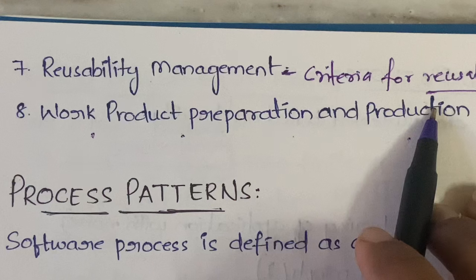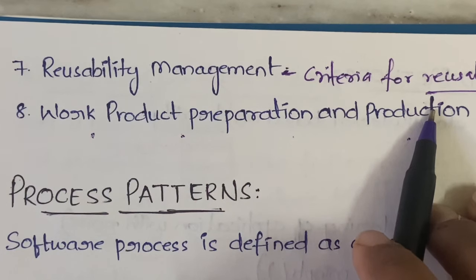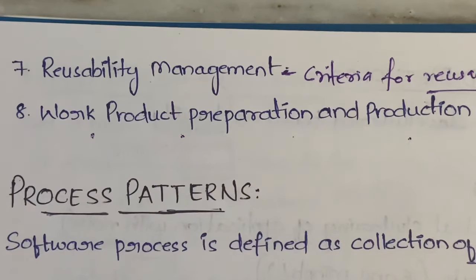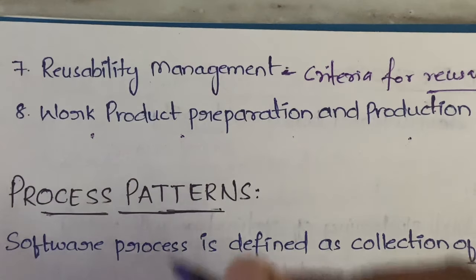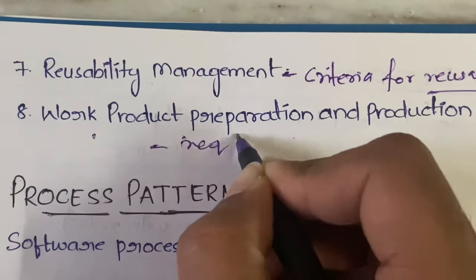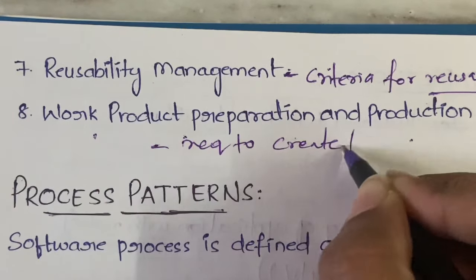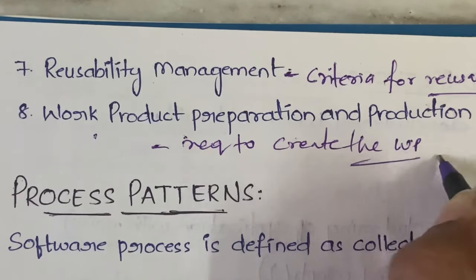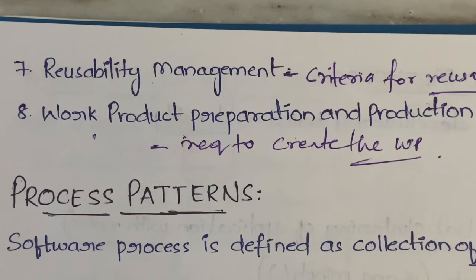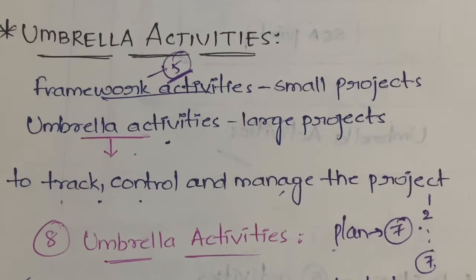The eighth activity is work product preparation and production. Here, it covers all the documents, tables, records, and files required to create a work product. In order to create a work product, the requirements can include files, tables, records, documents, and so on.